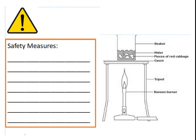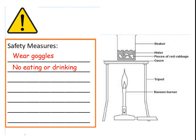Next, you've got a diagram of the apparatus set up and an empty box for safety measures. Pause the video and fill in some safety measures you need to consider when doing this experiment. Hopefully you've got your safety measures now — if you need to make corrections, remember to use your different coloured pen. My safety measures were: wear goggles, no eating or drinking, no sitting — you'd be standing in the lab with your stool tucked under the table — and no running. You may have more, such as tying your hair back.